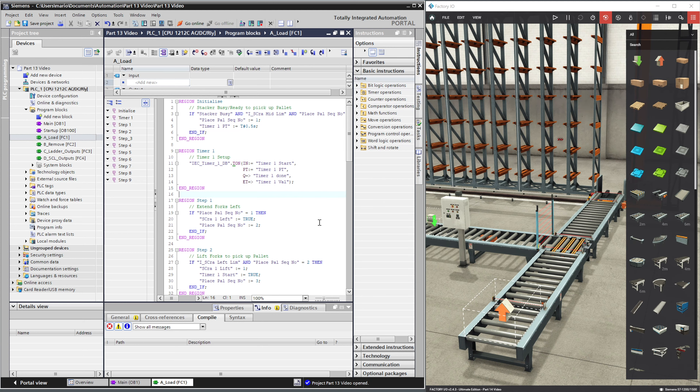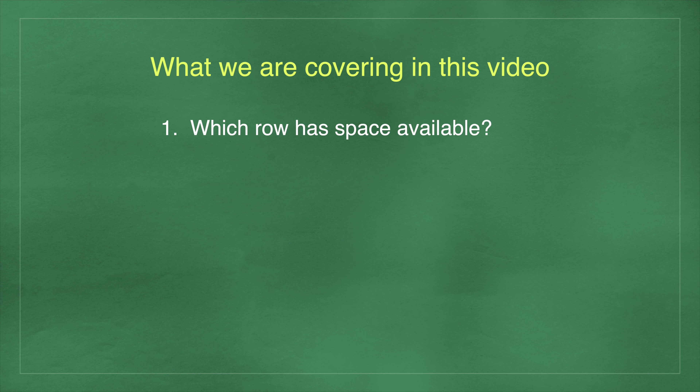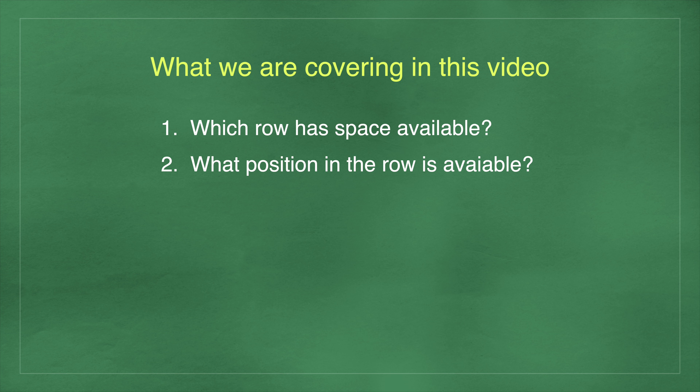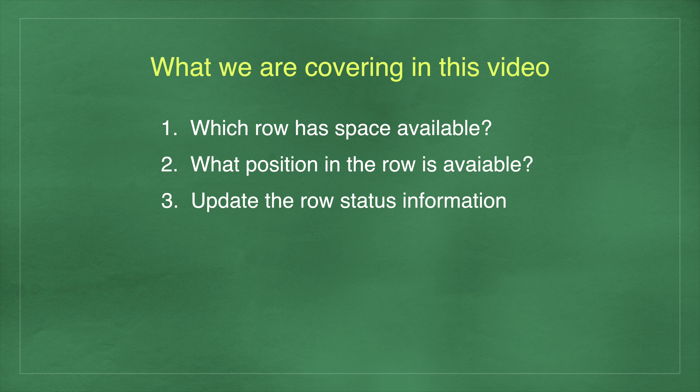Using these commands will require three main changes to the existing code. Firstly, we need to check which row has space available. Then secondly, once we've decided on the row, we need to check what position in the row is available — essentially the destination. And lastly, once we place a pallet in the rack, we then need to update the row status information, which will be checked when the next pallet requires loading.